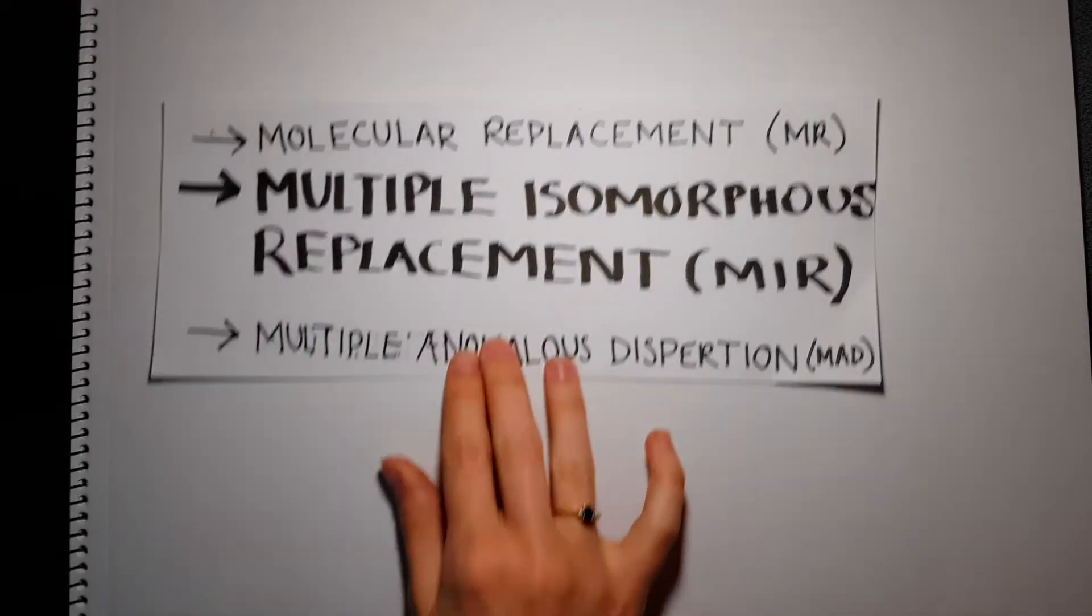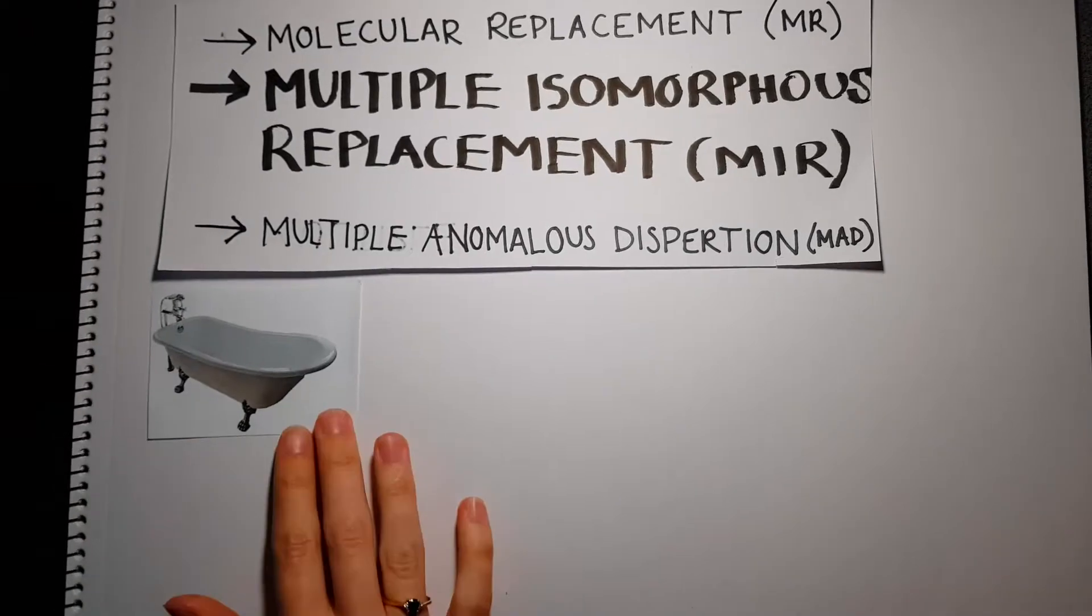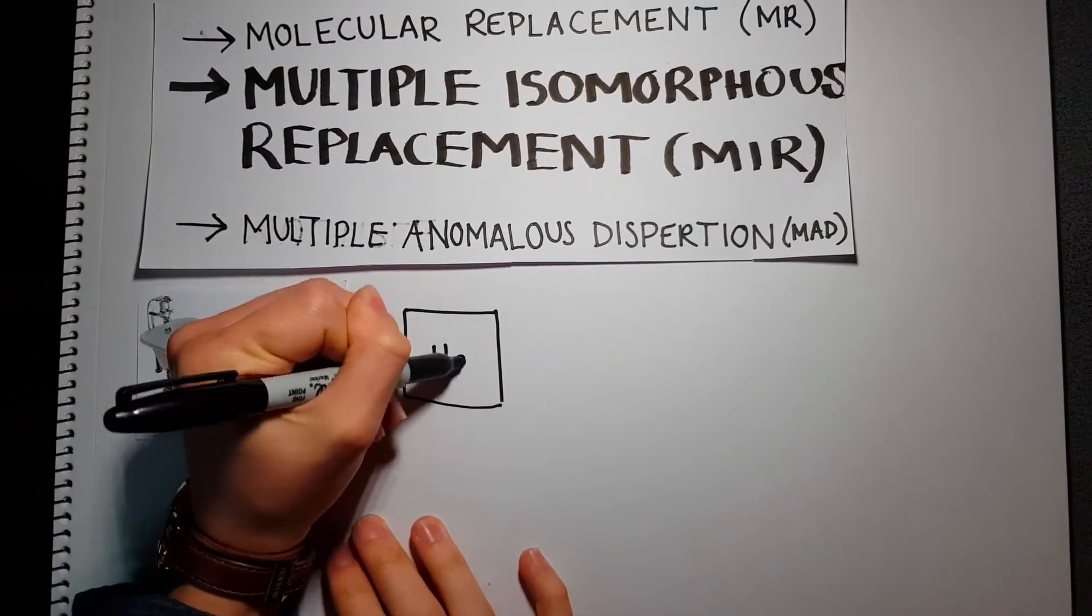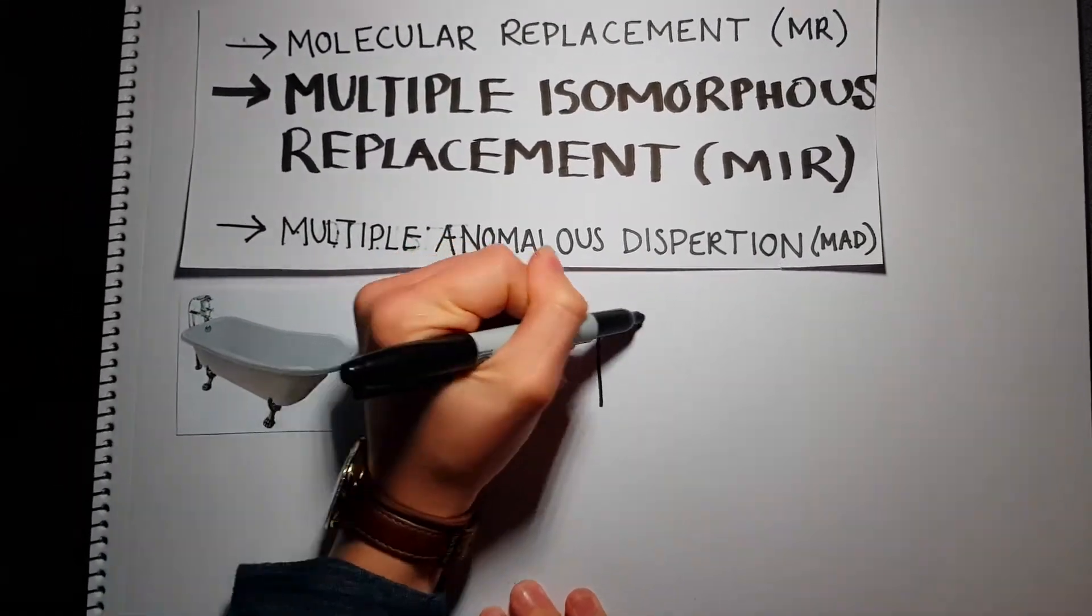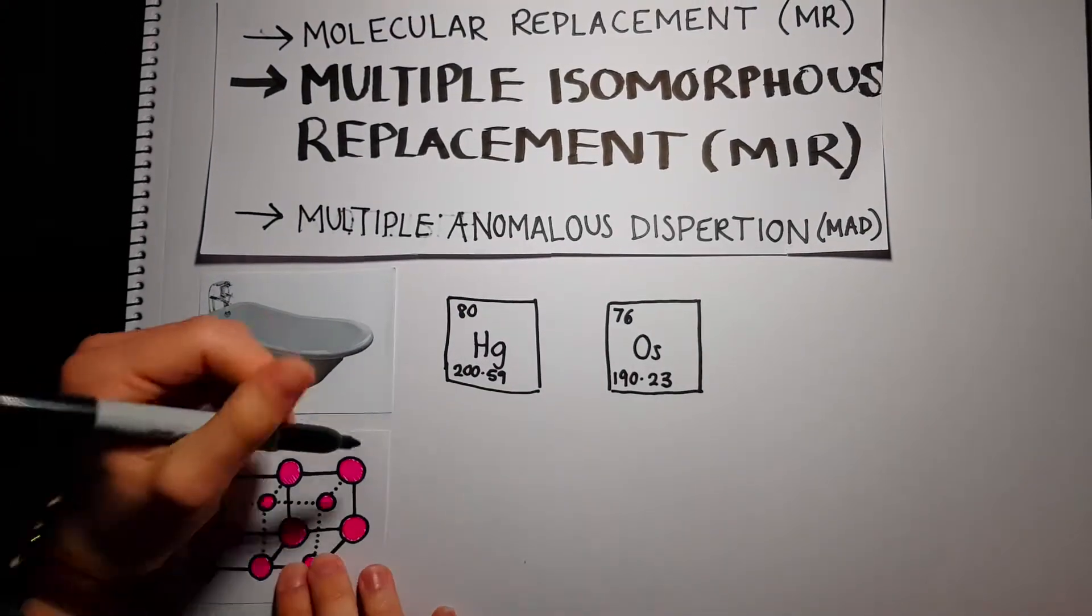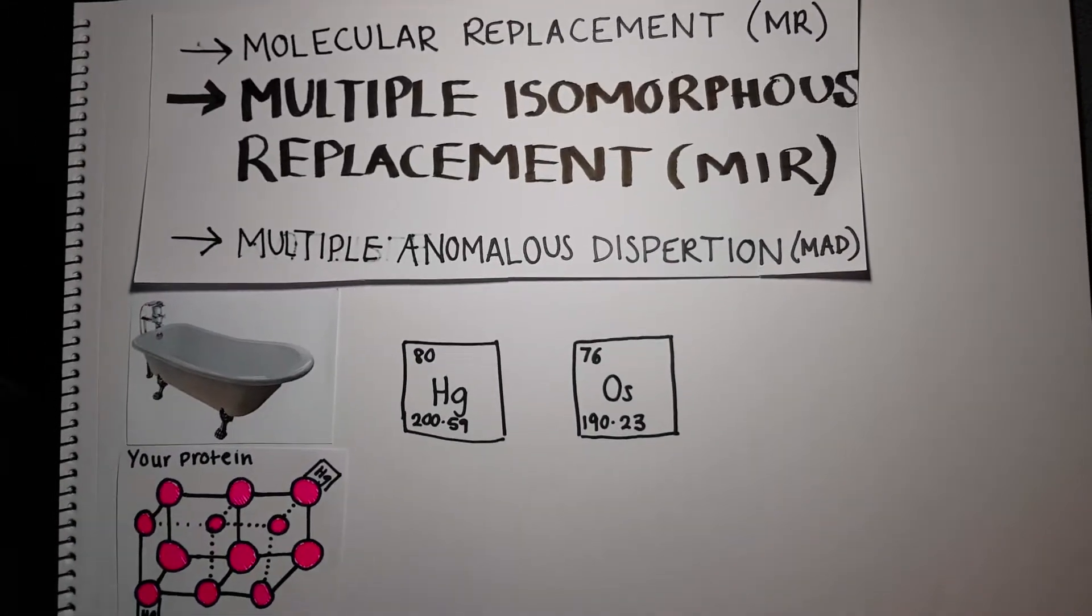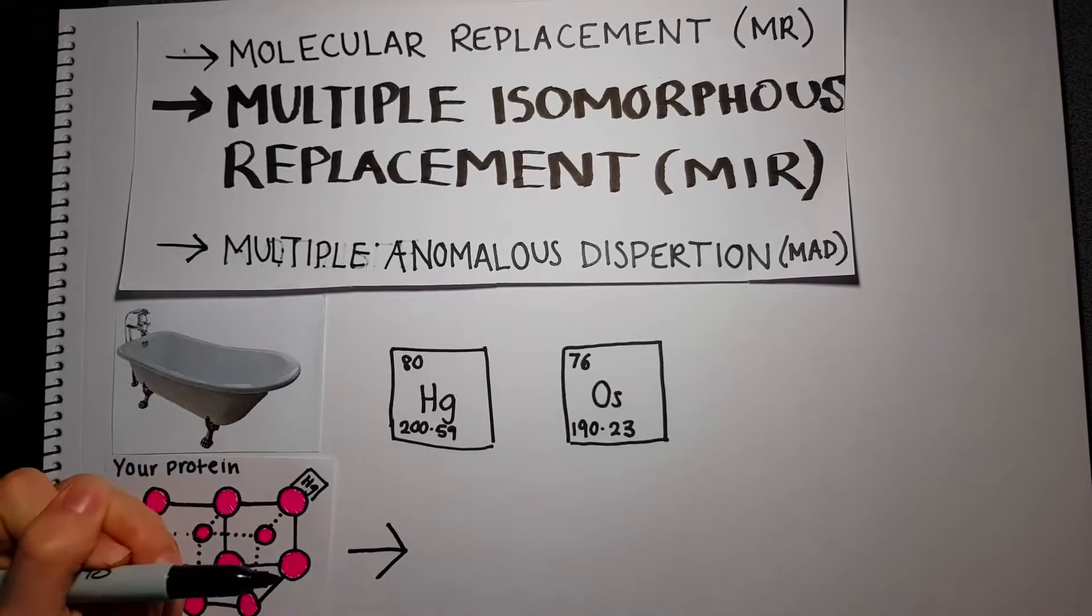Solving the phase problem can also be done through multiple isomorphous replacement. The protein is soaked in a heavy metal solution such as mercury or osmium, which binds to one or more positions in the protein to alter the molecular structure. This structural alteration helps acquire knowledge about the molecule's structure.